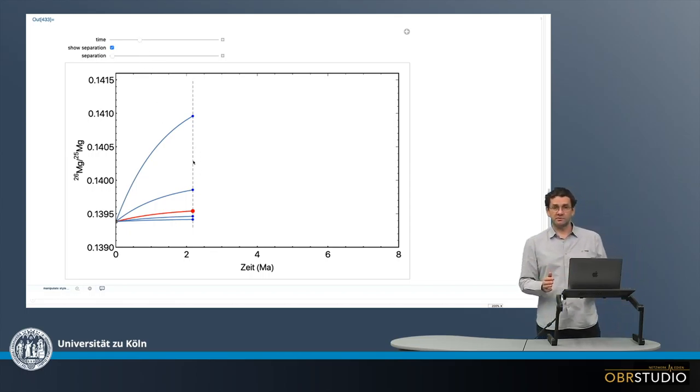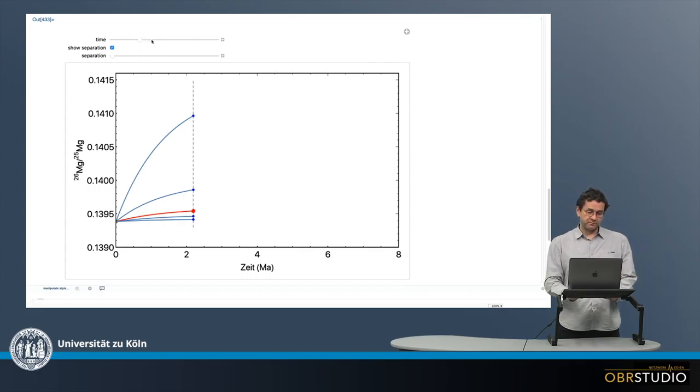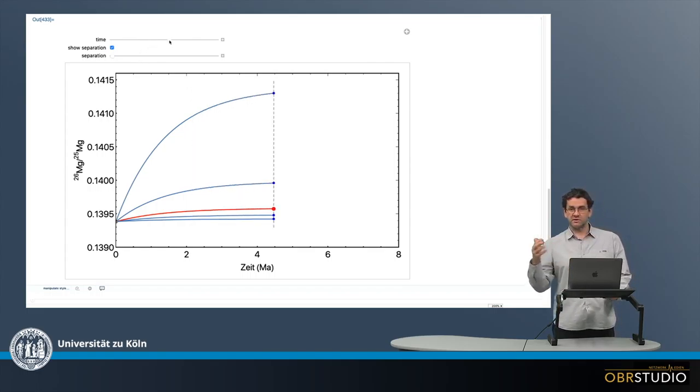The dashed line here is the isochron, because these are all the reservoirs of the various components at a certain time. So it's a vertical line here, and here you can see how these various reservoirs evolve.